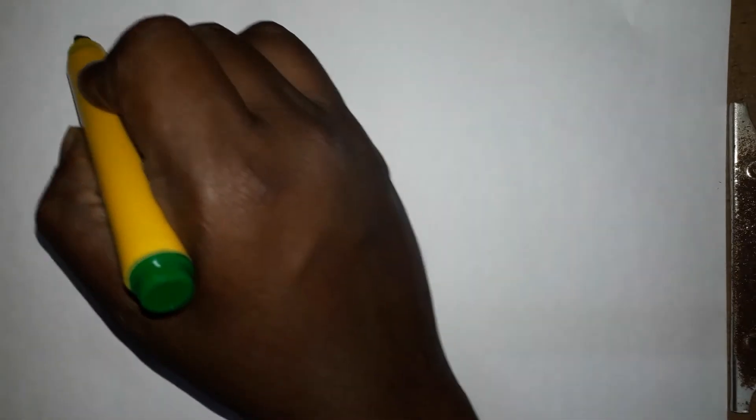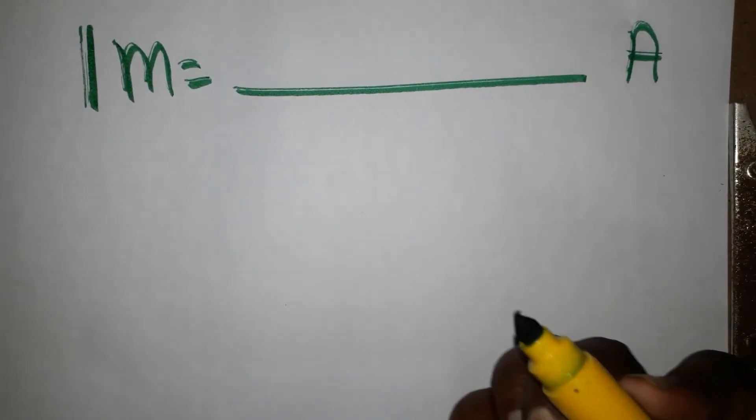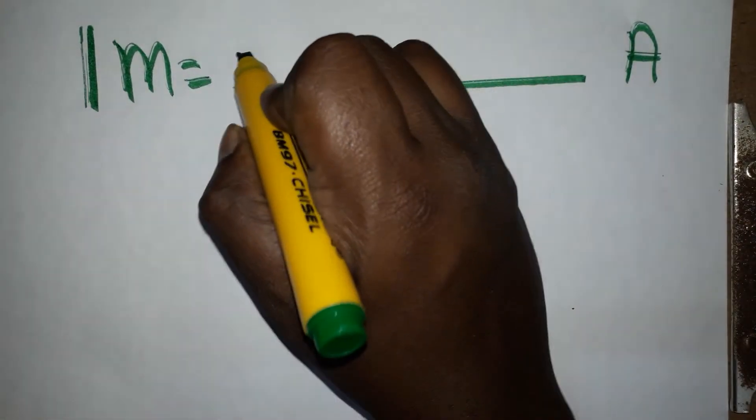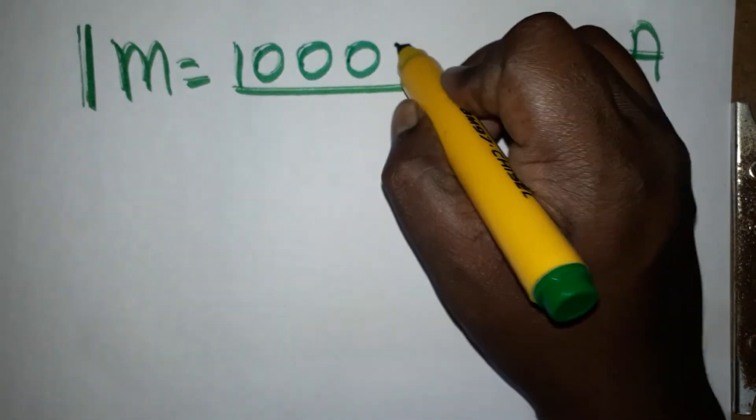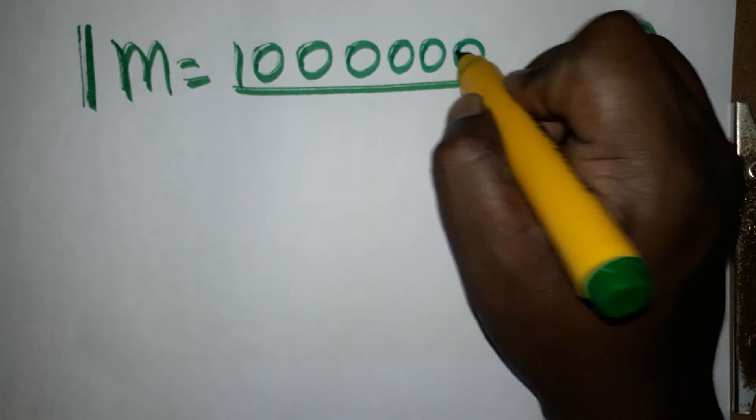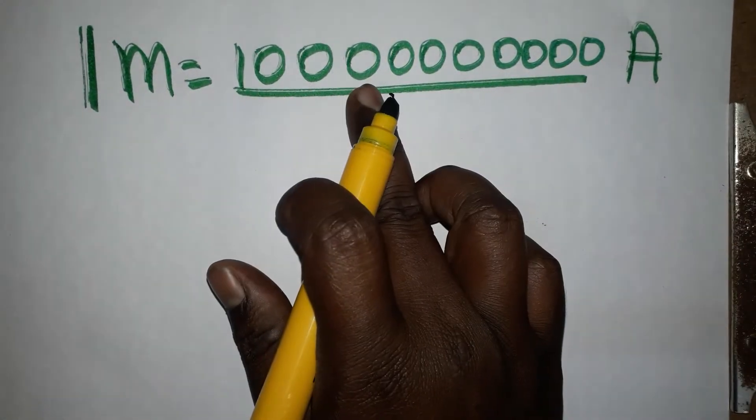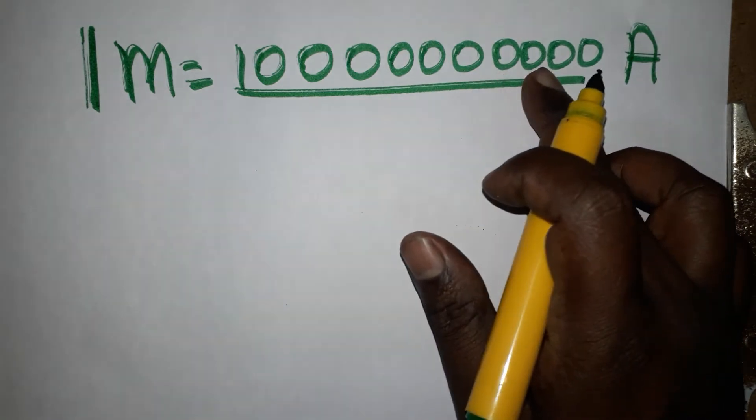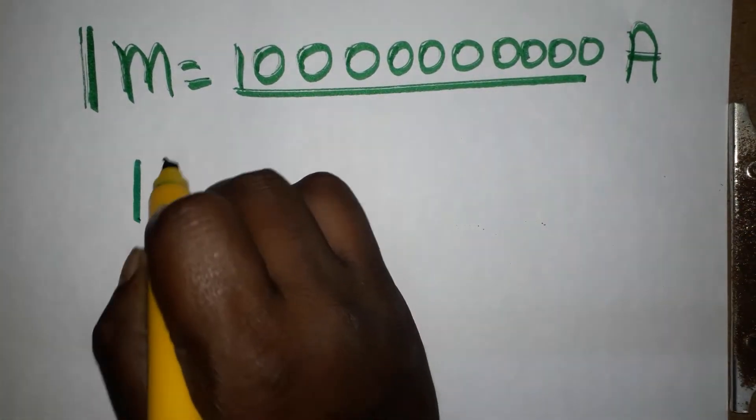Hello students, today we are going to learn one meter equals how many angstrom units. So one meter is like ten zeros - one, two, three, four, five, six, seven, eight, nine, ten zeros angstrom units.